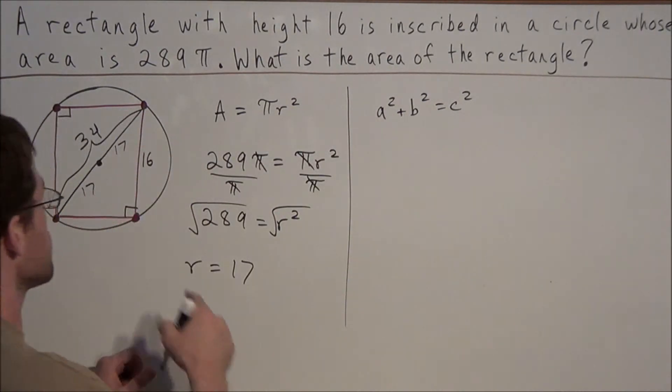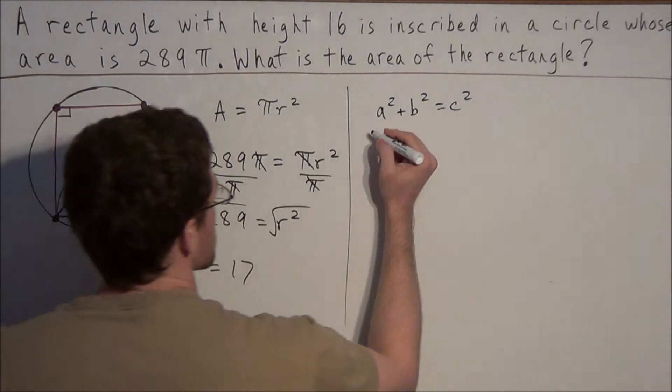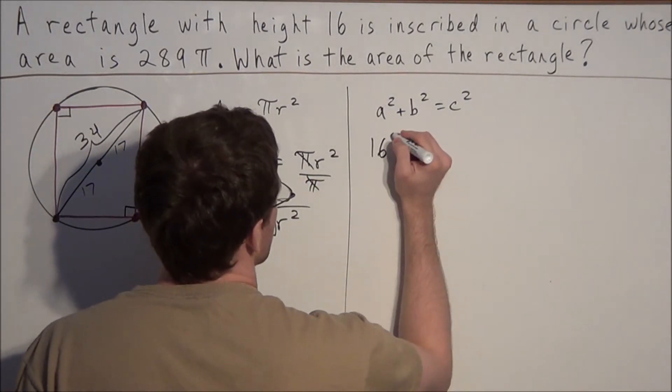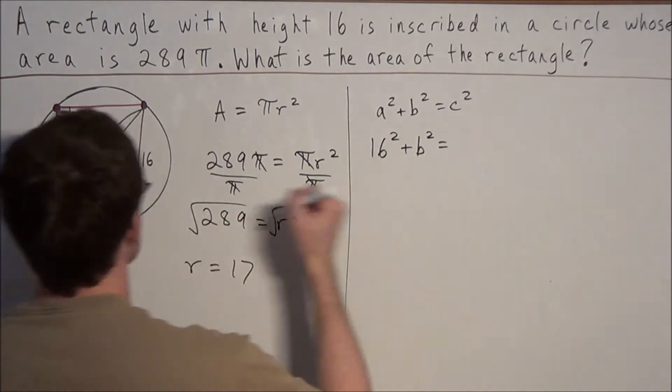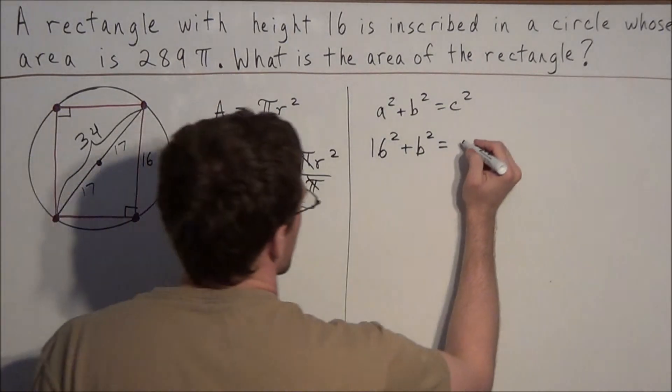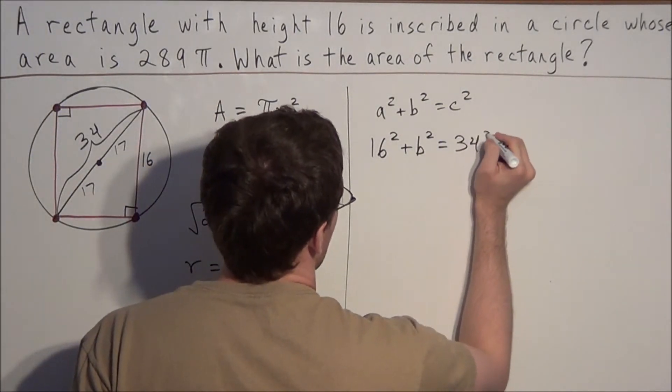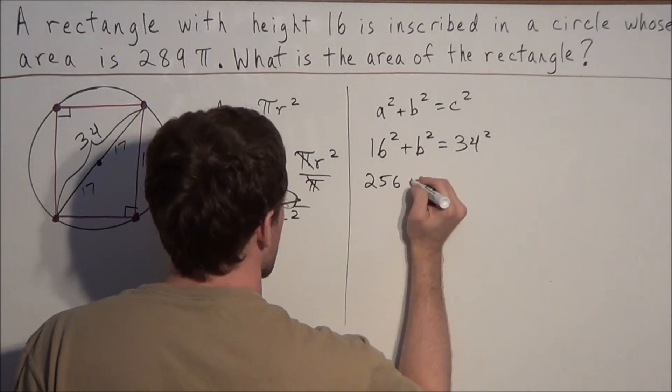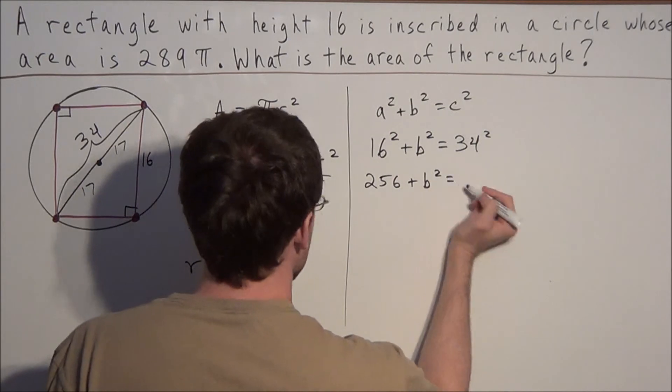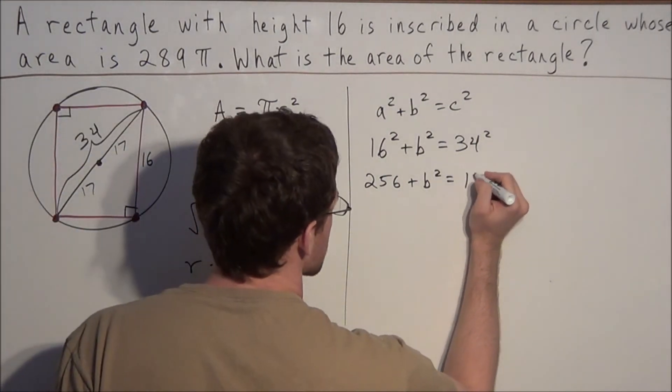So all we need to do now is substitute. We know one of the legs is 16, so we have 16² + b² equals the hypotenuse, which is 34. And we're squaring this quantity. So now 16² is 256, plus b² is equal to, and 34² is 1156.